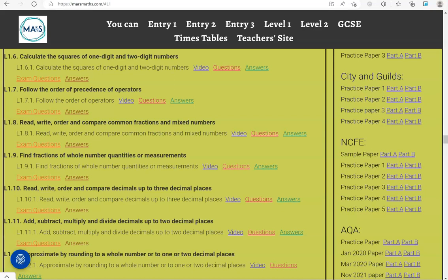In this video, we'll go through exam questions that cover the criteria: read, write, order and compare decimals up to three decimal places. You can locate the questions on the massmass.com website under Level 1.